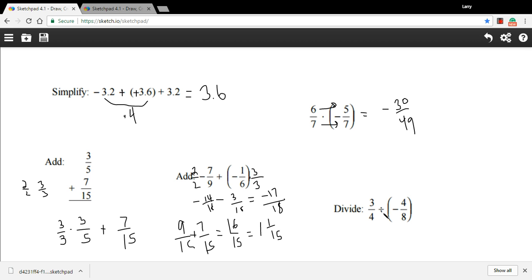When you divide fractions, rewrite it as a multiplication problem. Take that second one and turn it upside down, and instead of division, put multiplication. 3 fourths divided by negative 4 eighths is the same as 3 fourths times negative 8 fourths. Multiply across the top and across the bottom to get negative 24 sixteenths. We can divide both by 8, so that's negative 3 halves.